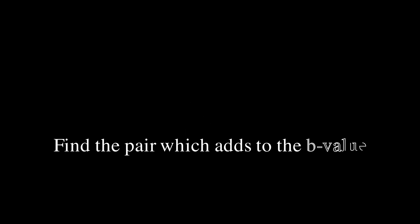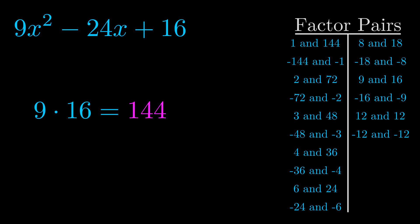The b value is the coefficient on the x term. That's the middle term, the one that we haven't done anything with yet. And really this is the only factor pair that we need.